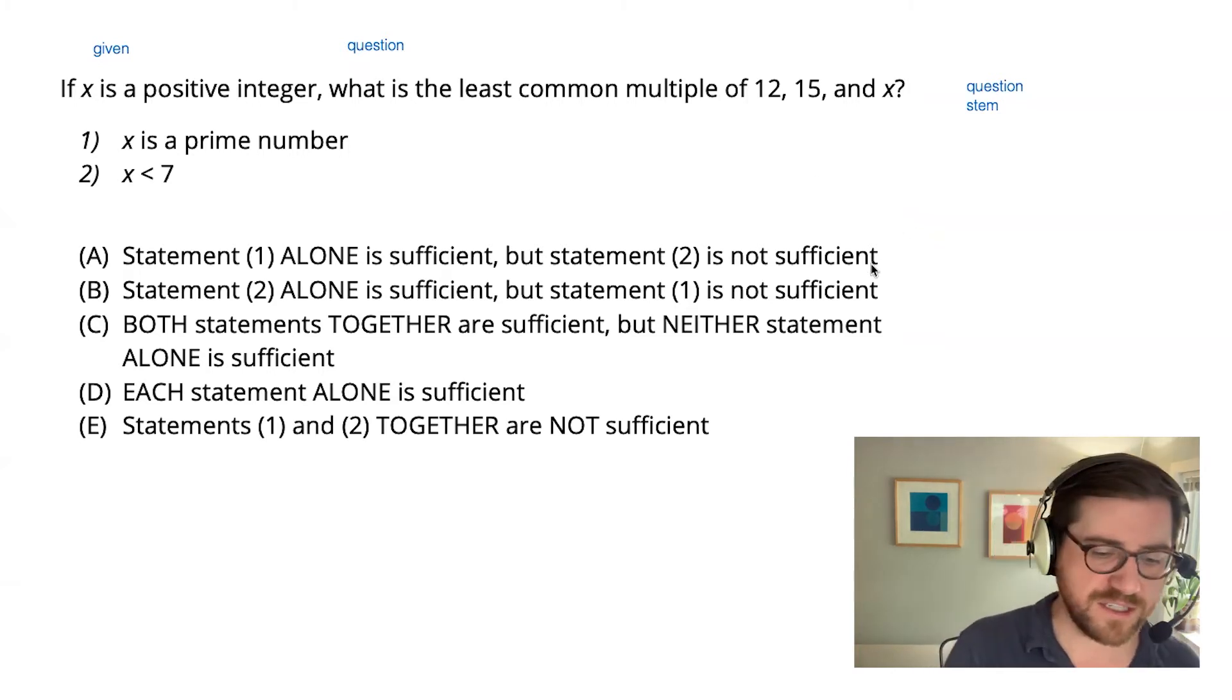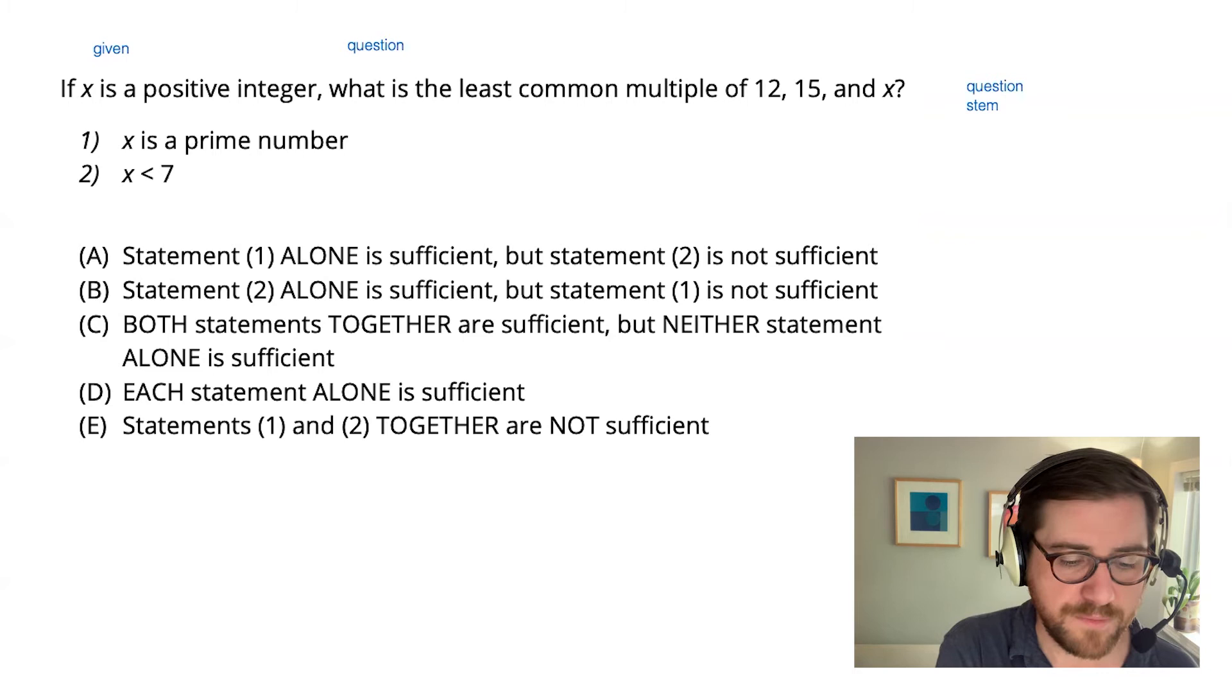So we know right away that x is something like 1, 2, 3, etc. So there's the given. And the question is asking us for the least common multiple.